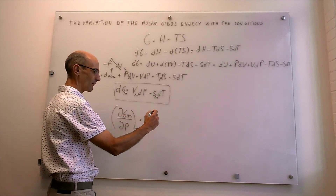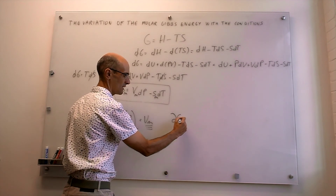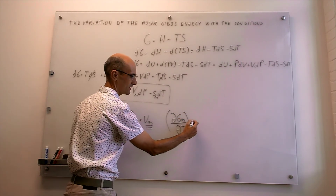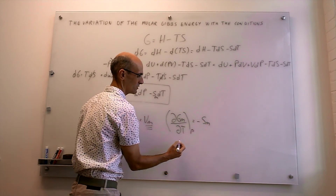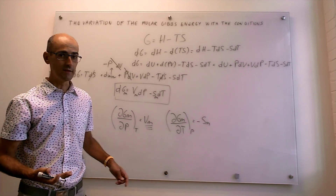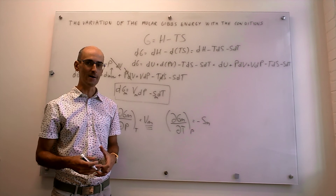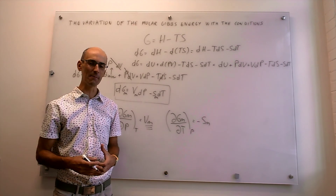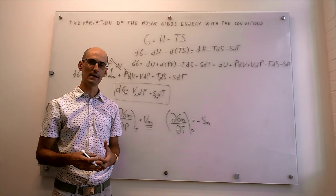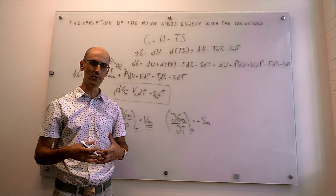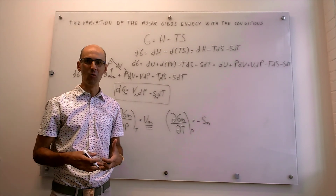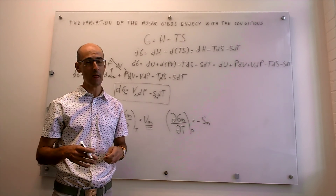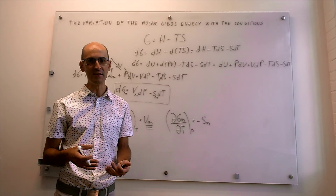Likewise, for the temperature dependence: if we freeze the pressure and study how the molar Gibbs energy changes with temperature, it follows the negative molar entropy. Molar entropies are also known — we have tables from the third law that give us molar entropies of pure substances. In the next few videos, we'll see how these dependencies on pressure and temperature help explain why a substance might be liquid, solid, or gas under certain conditions, and how changing pressure or temperature can shift the stable phase.